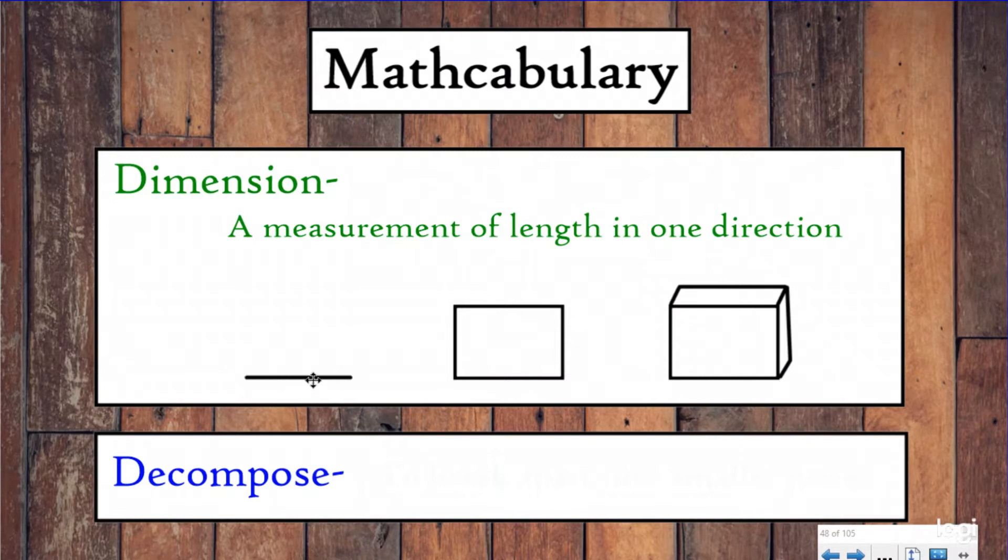Our definition for dimension is the measurement of length in one direction. Here we have a line. This is one dimensional because you can only measure the length in one direction. You could say the length is maybe four centimeters. Here we have a rectangle. We can measure the length and the width. We can now measure this in two directions, making it two dimensional.